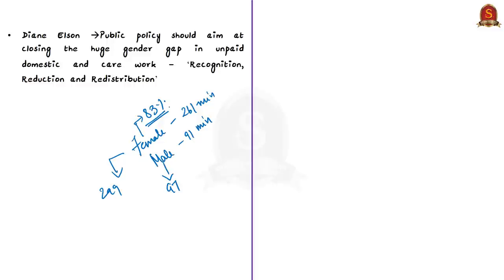Can the proposed policy address the huge burden that women are forced to endure daily? Feminist economist Diane Elson opined that public policy should aim at closing the huge gender gap in unpaid domestic and care work through recognition, reduction and redistribution — the 3R method. Kamal Haasan's proposal only satisfies the first component — recognition. Paying a wage is a formal recognition of the fact that unpaid domestic and care work is no less important than paid market work. The proposal appears progressive for this reason and to that measure, but it fails in the other two aspects.